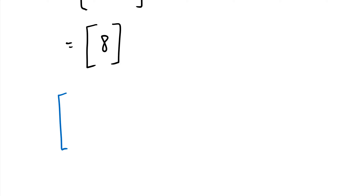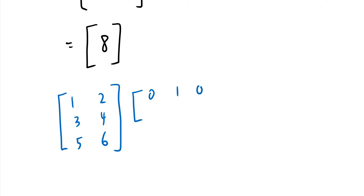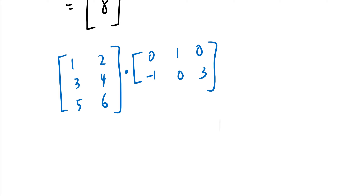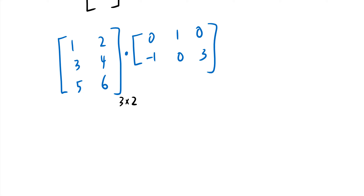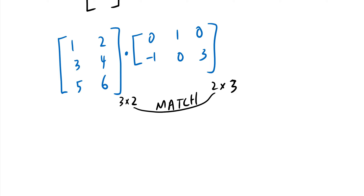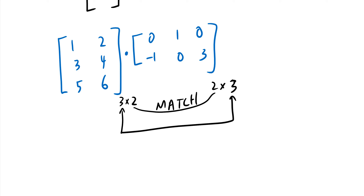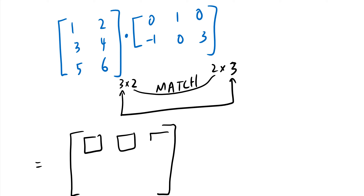Next example: multiply [1, 2; 3, 4; 5, 6] by [0, 1, 0; -1, 0, 3]. This is a 3×2 matrix times a 2×3 matrix — the inner dimensions match, so we can multiply. The result will be a 3×3 matrix with nine entries.